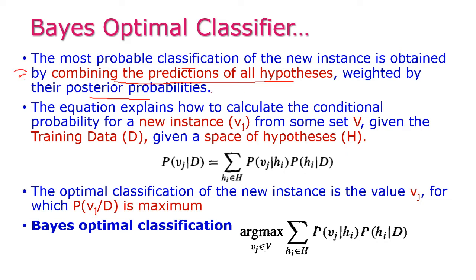This is important. The equation explains how to calculate the conditional probability — specifically the conditional probability of a new instance vj from a set V, given the training data D and the space of hypotheses capital H.